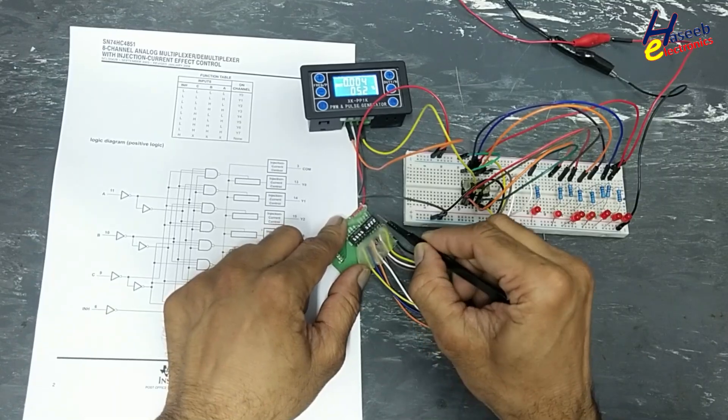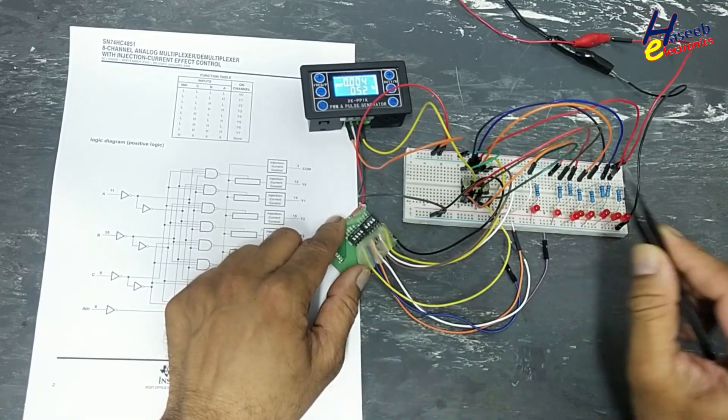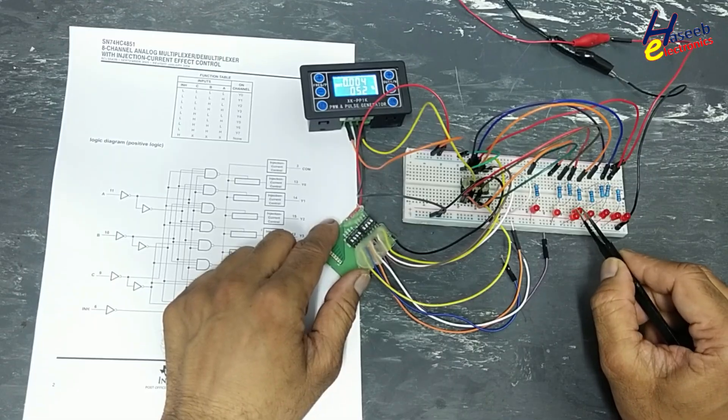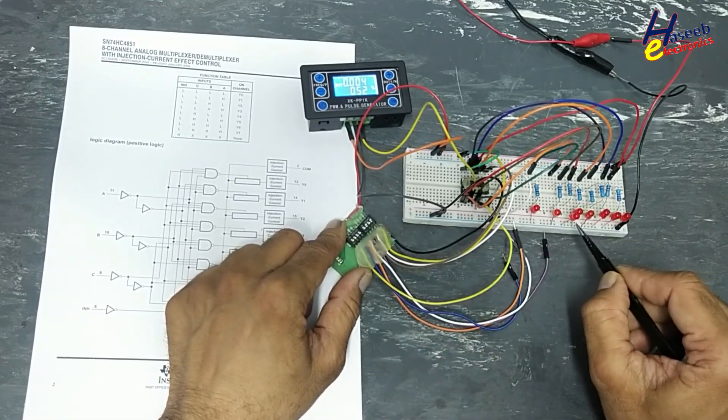BCD four: one zero zero. This LED, this channel is activated. One zero one, this one.